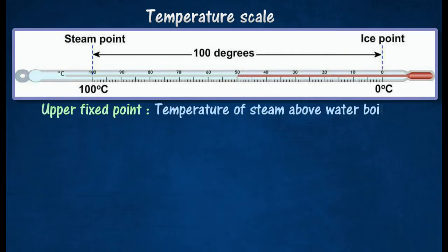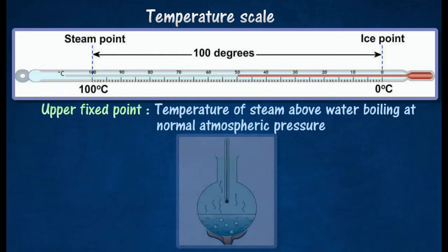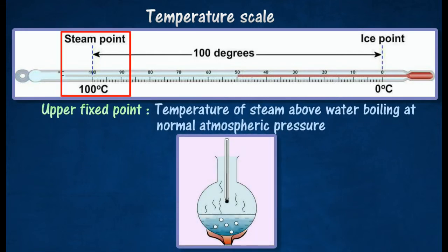The upper fixed point is taken as 100 degree Celsius and it is the temperature of steam above water boiling at normal atmospheric pressure. The distance between the lower and upper fixed point is then divided into 100 equal divisions where each division is equal to 1 degree.